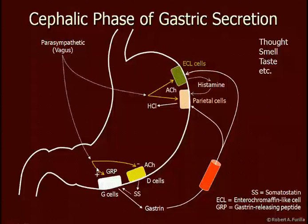Through the enteric nervous system, GRP is released to trigger G cells to release gastrin, and through ACH, D cells are inhibited. These parasympathetic influences begin acid secretion in the stomach even before food enters, in anticipation of food entering the stomach.